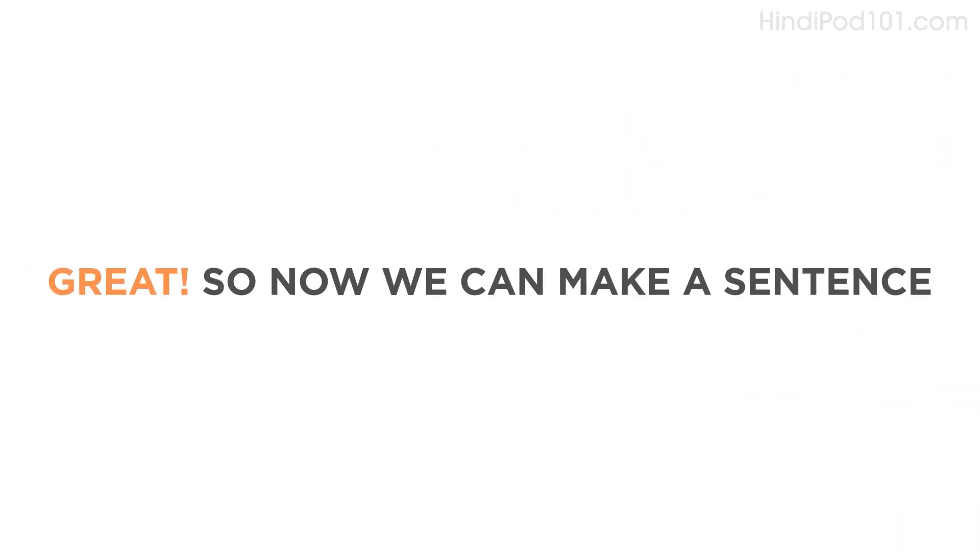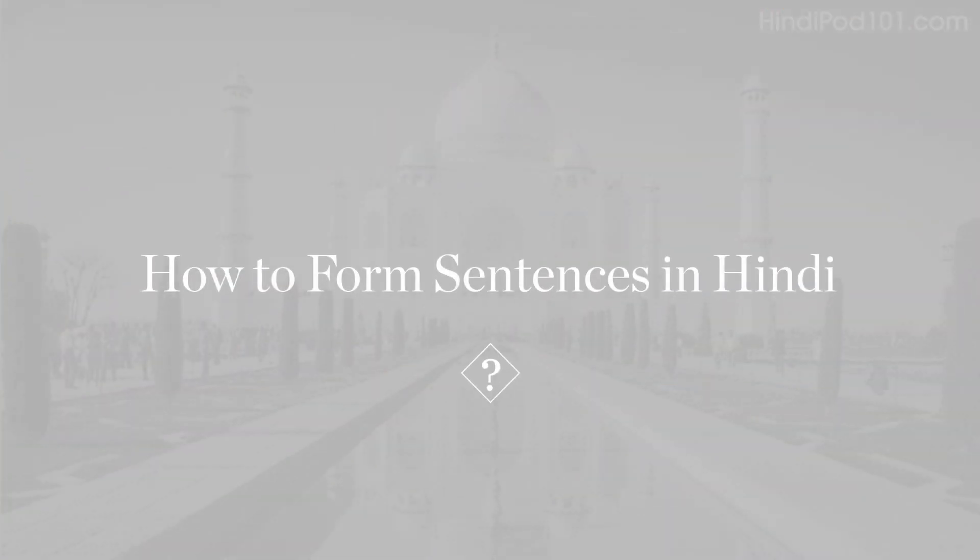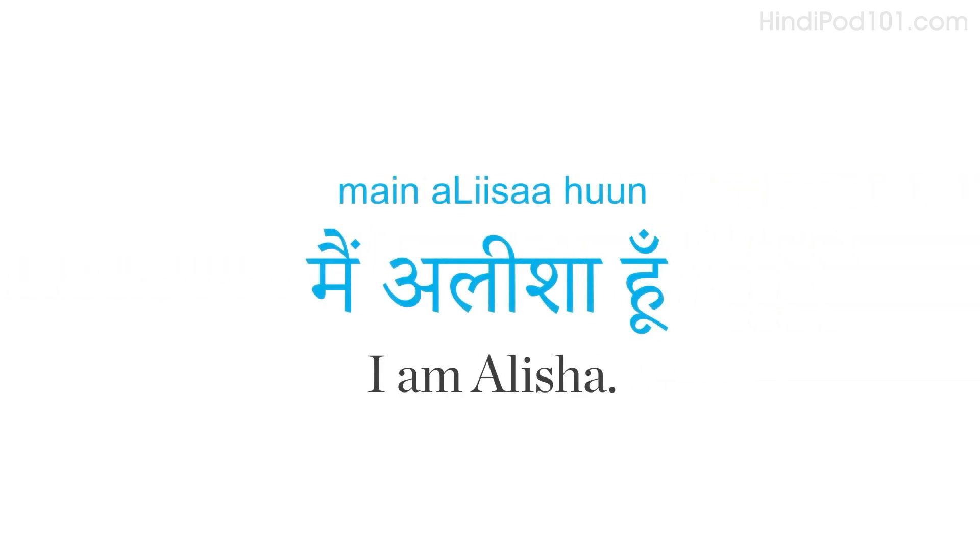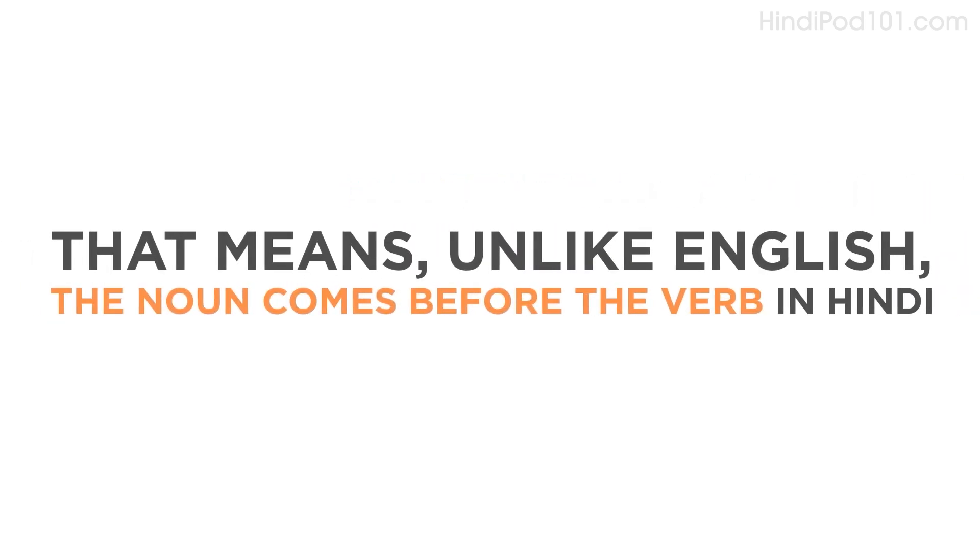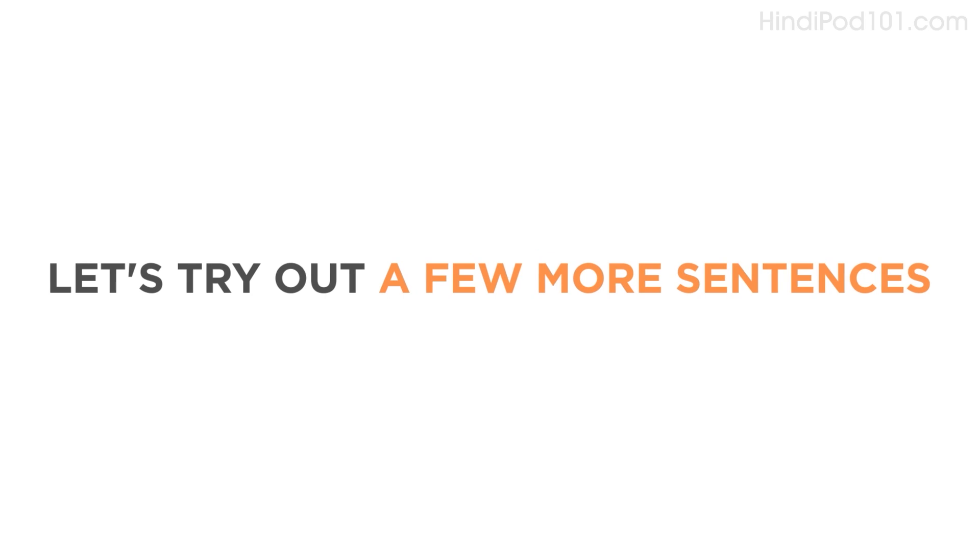So now we can make a sentence. How would you say, 'I am Alicia'? That would be, 'main Alicia hoon'. So, the order of the words is 'I', 'Alicia', 'am'. Or, pronoun, noun, verb. That means, unlike English, the noun comes before the verb in Hindi. Indeed. Let's try out a few more sentences.